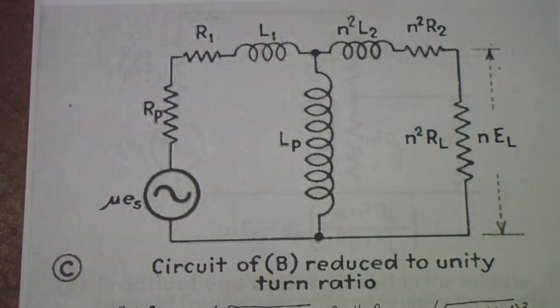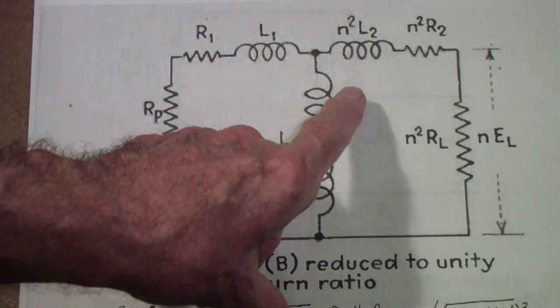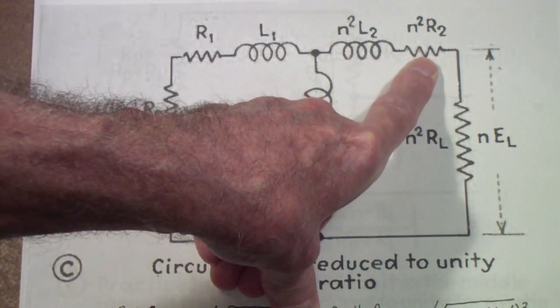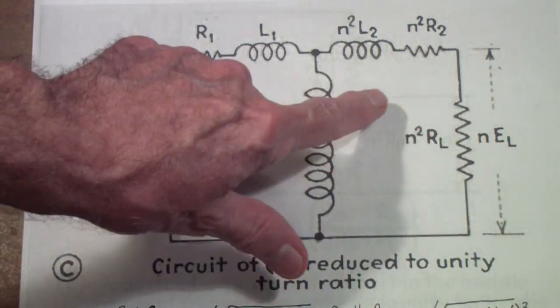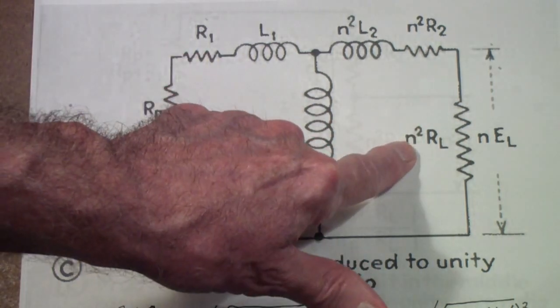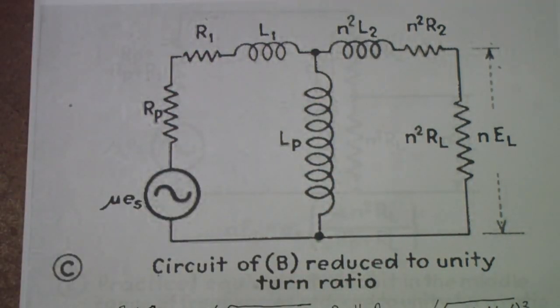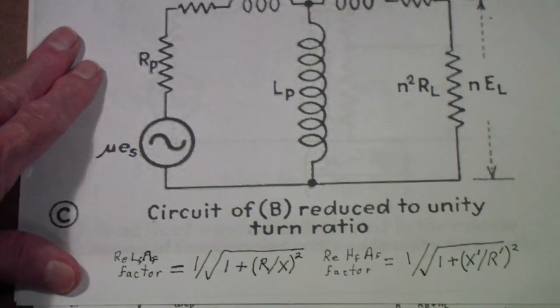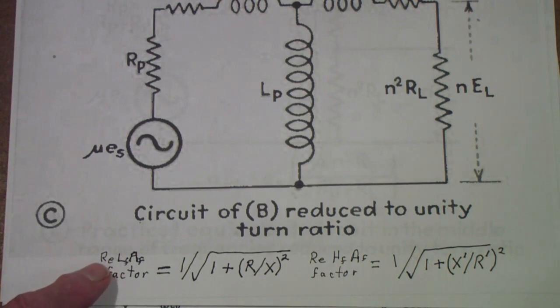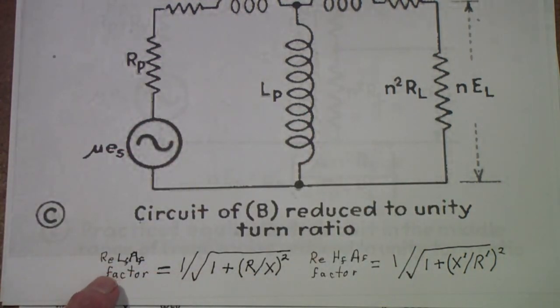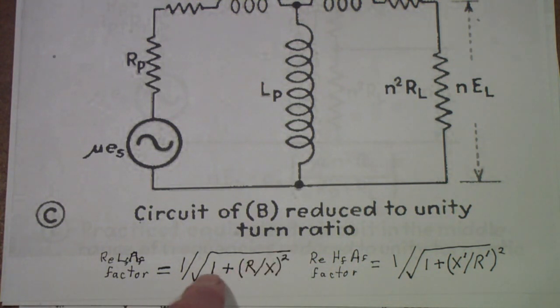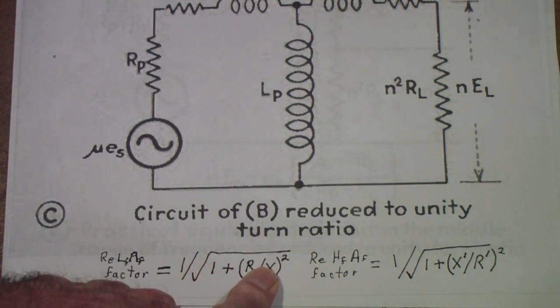Now, you can adjust for any other turns ratio, but it's easier just to work from a unity turns ratio, and then change your numbers based on the actual turns ratio. So, this is the number of turns squared times R2, where R2 is the resistance of the transformer secondary, and then N2 times RL, where RL is the load resistance. So, what he does is he finds the mid-frequency gain of this stage, and then he adjusts the gain for low frequency and high frequency based on these quantities, which are just the RMS, in other words, the square root of the sum of the squares of these two values.